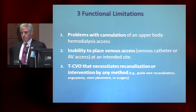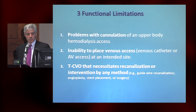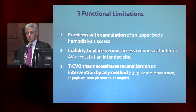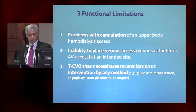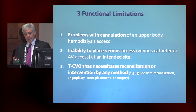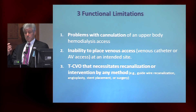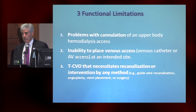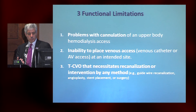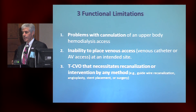There are a couple of things missing from the above: functional limitations. These are things a patient may not complain of — not a sign or symptom — but include problems with cannulation of an upper extremity, hemodialysis access on the basis of arm swelling due to central venous obstruction, inability to place venous access — which is a real big deal affecting pediatric interventionalists, surgeons, anesthesiologists, cardiologists — and finally, thoracic central vein obstruction that necessitates recanalization or intervention by any method.